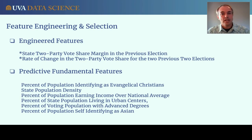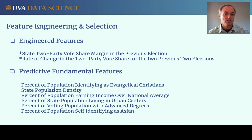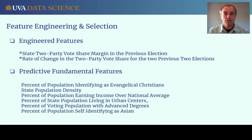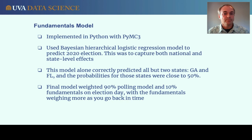Using random forest and lasso regression, they determined a feature set of eight variables that maximized predictive ability to determine a Democratic or Republican state win. Two of these features were engineered to capture changing trends in states due to shifts in the composition of party coalitions. The remaining six features came directly from the dataset.